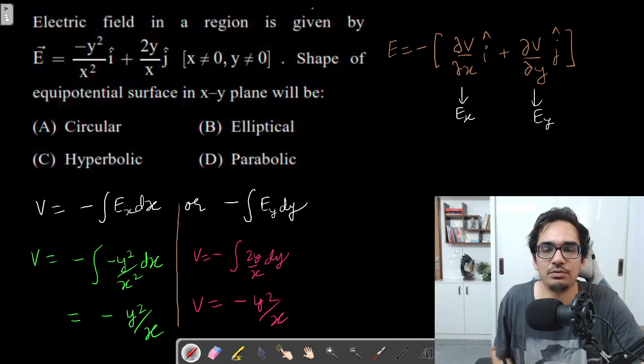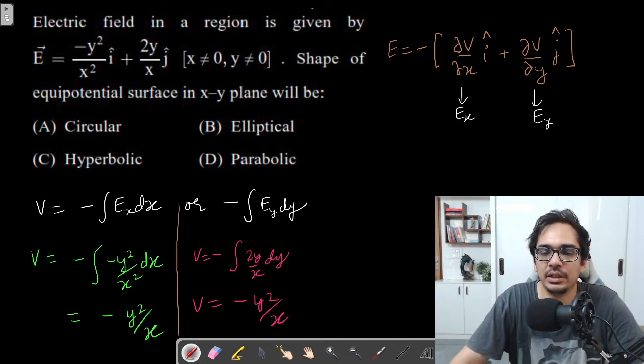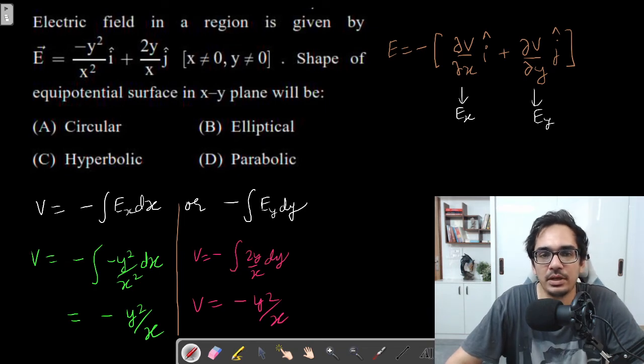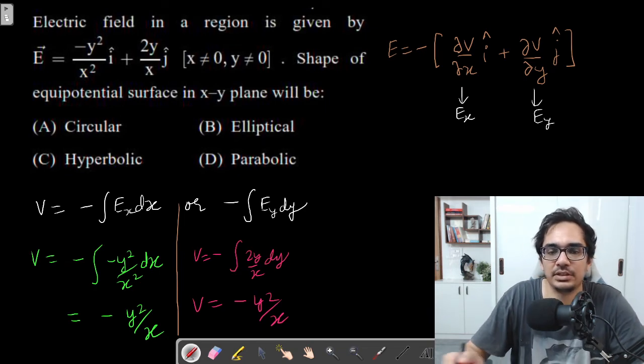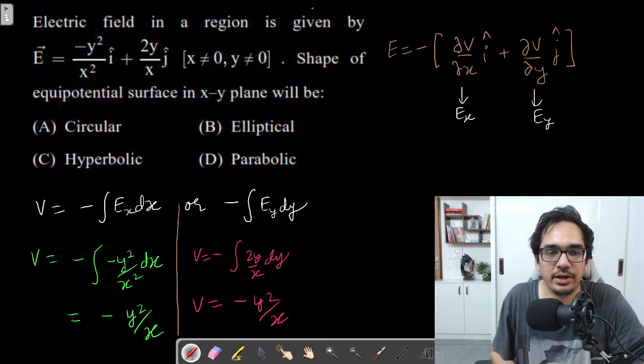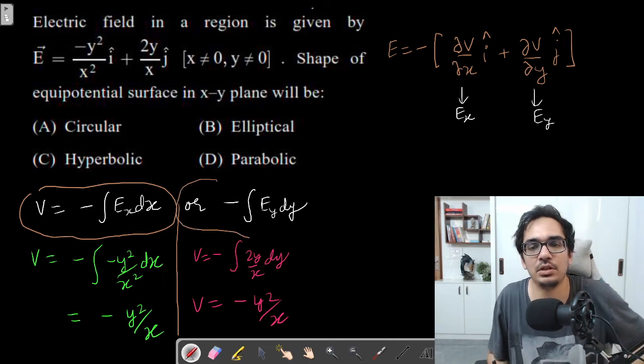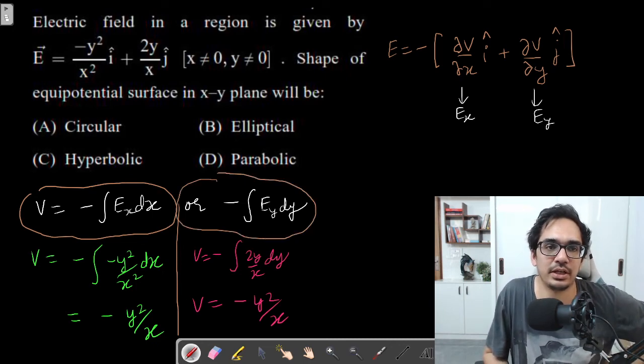You can cross verify also. If V equals minus y squared by x, differentiate with respect to x, you get minus y squared by x squared in i cap. Then differentiate with respect to y, you get 2y by x j cap. So basically this equation is correct. The point was either use minus Ex dx or use minus Ey dy. Both will give you the potential expression, and that's how you solve equations like this.